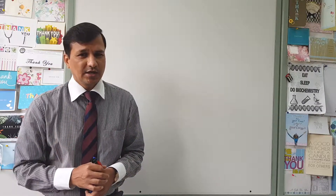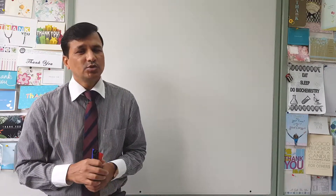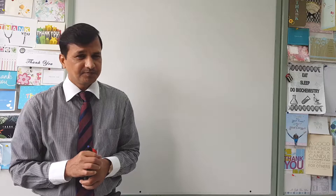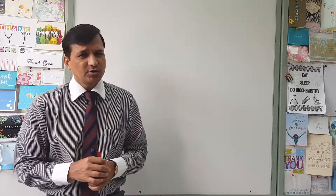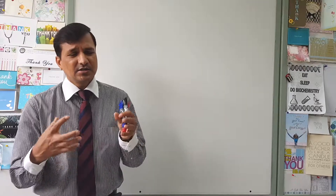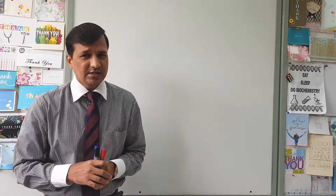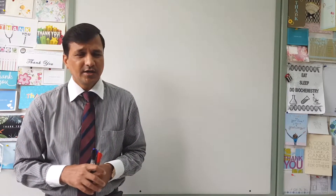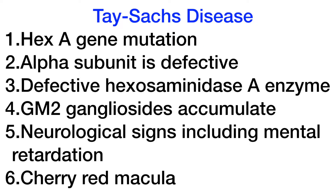This gives rise to accumulation of GM2 gangliosides, which is why Tay-Sachs disease is also called GM2 gangliosidosis. The lysosomes are filled with undegraded GM2 gangliosides, causing severe neurological signs and symptoms. The patient may be blind, deaf, and have mental retardation. Muscles can be affected, resulting in muscle atrophy, spasticity, and difficulty in swallowing. Patients with Tay-Sachs disease can also have a cherry red macula.